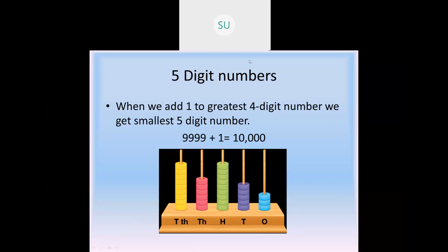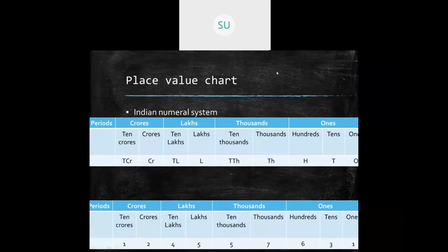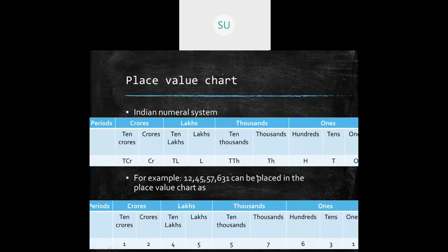We studied large numbers in two numeral systems. In the Indian numeral system we have ones, tens, hundreds, thousands, ten thousands, then lakhs, then ten lakhs, then crores, then ten crores. For example, writing a number in the Indian place value chart gives: twelve crores, forty five lakhs, fifty seven thousand, six hundred and thirty one.